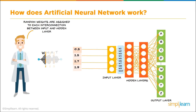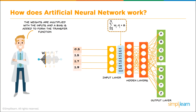Random weights are assigned to each interconnection between the input and hidden layer. We always start randomly — if we set them all to the same value it would take forever to train and gives a worse result. The weights are multiplied with the inputs and a bias is added to form the transfer function: a sum of each weight times its input value, plus a bias. If you ever build your own neural network, don't forget to add the bias — it tends not to work as well without it. Weights are also assigned to the interconnections between the hidden layers.